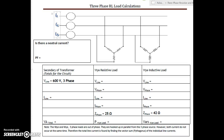Next up: three-phase RLC circuits. We have a resistive load connected as a Y and an inductive load connected as a Y as well. Because we have different types of loads — resistive and inductive — we're going to have to use Pythagoras, because the currents don't happen at the same time. So when we find the line currents for each load, we can't just add them up like we did in the previous resistive-only examples.